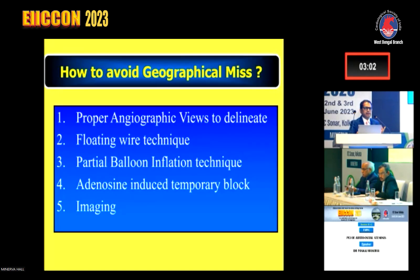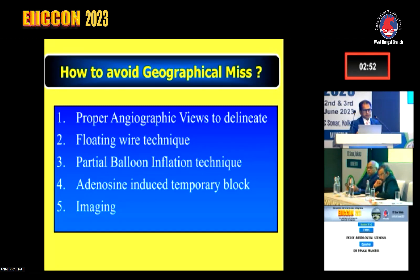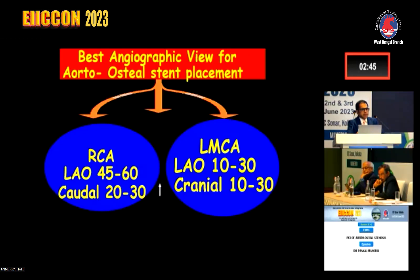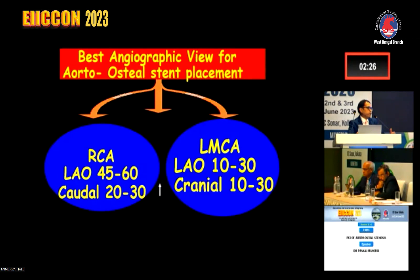Various techniques can help avoid geographical miss: floating wire technique, partial balloon inflation technique, and sometimes adenosine-induced temporary asystole to stabilize motion artifacts. Imaging is very important to assess whether we have covered the ostium or not. For best angiographic views for aorto-ostial stent placement: for LMCAs, use shallow LAO-cranial — LAO 30 to 10 degrees and cranial 10 to 30 degrees. For the right coronary artery, the best view is to make the vessel horizontal, achieved with LAO 45 to 60 degrees with some caudal angulation. These views should be kept in mind for proper assessment of the ostium.